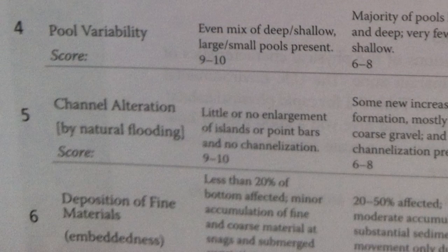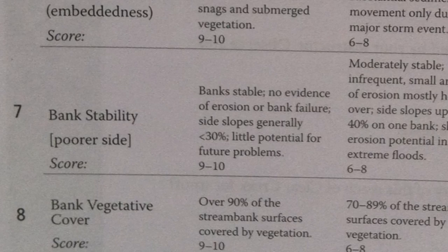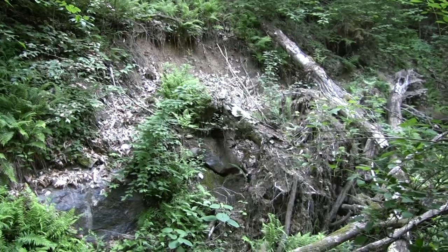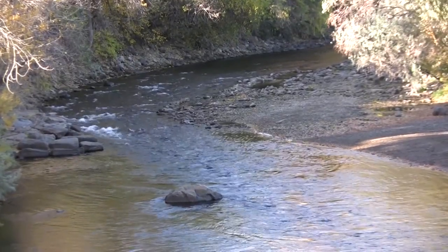The sixth parameter is deposition of fine sediments — how much of the bottom is covered with clay, silt, or sand? Trout don't like fine sediments because it gets in their gills. Also, bugs like to live in the nooks and crannies between rocks where the current is slower, and fine sediments displace the bugs by filling in the spaces where they live. Eroding banks contribute fine sediment directly into the water.